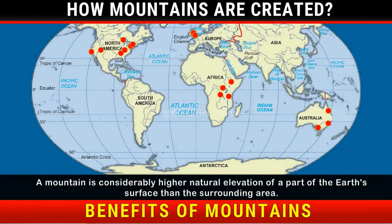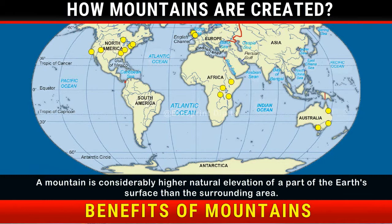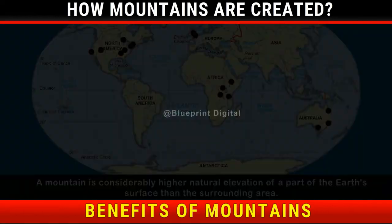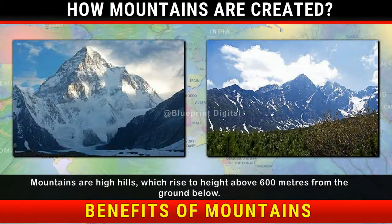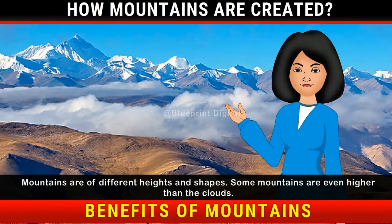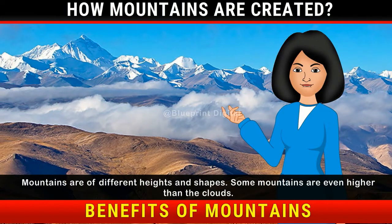Mountains. A mountain is a considerably higher natural elevation of a part of the earth's surface than the surrounding area. Mountains are high hills which rise to a height above 600 meters from the ground below. Mountains are of different heights and shapes.